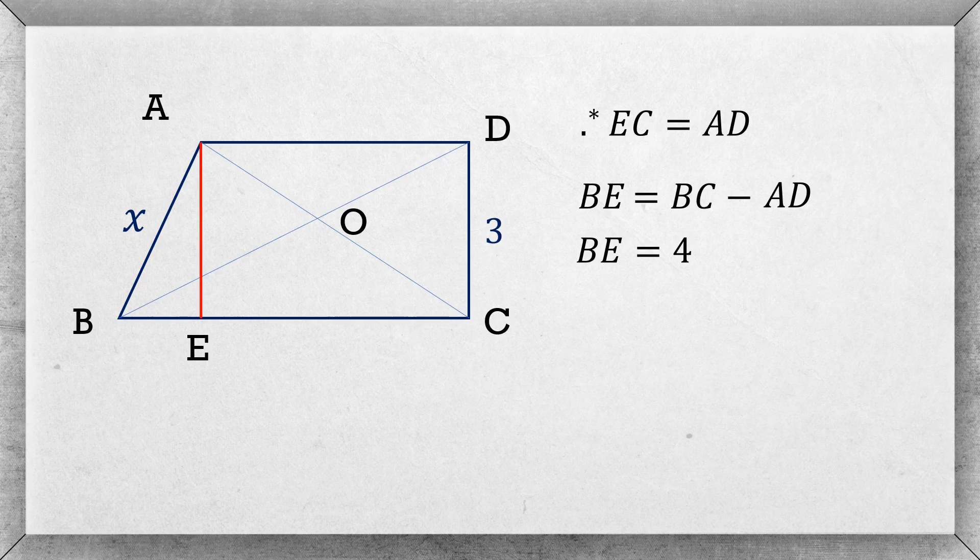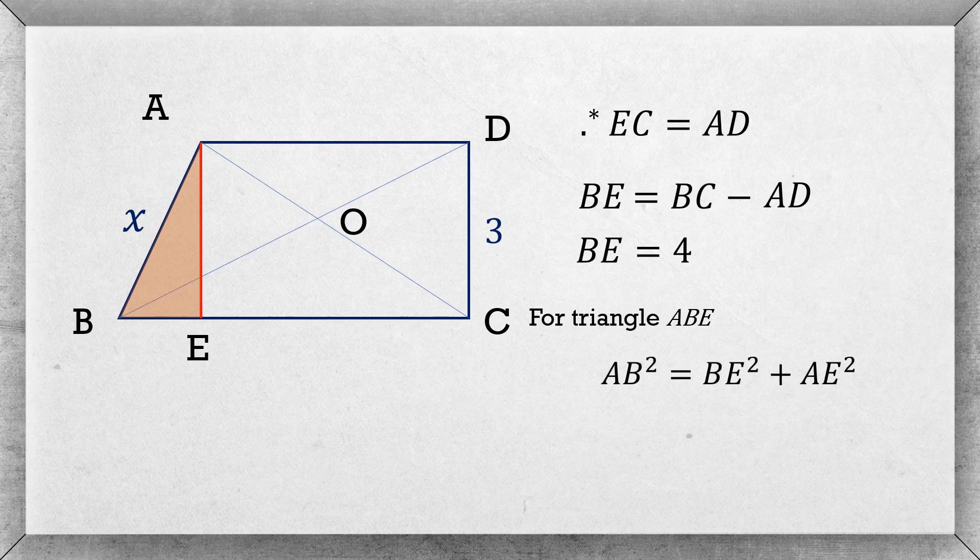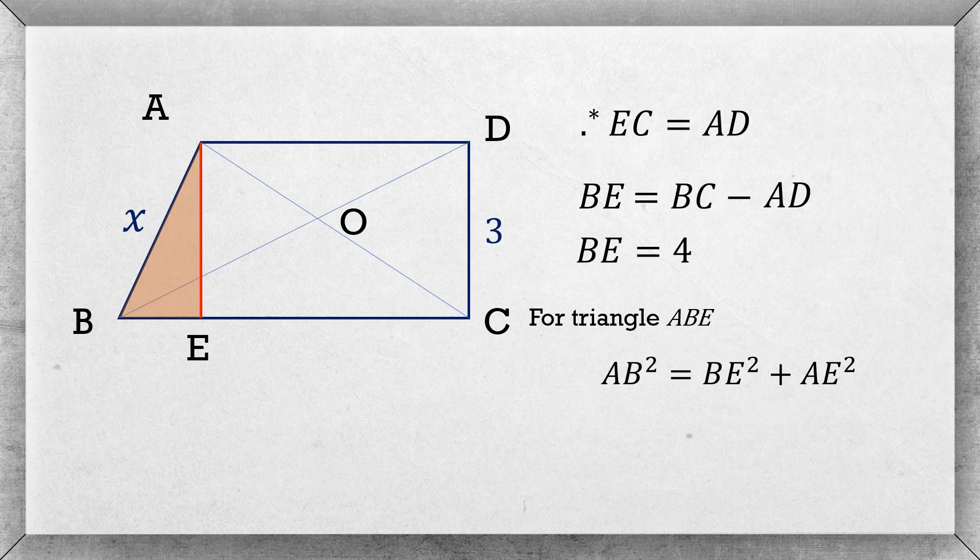Take the triangle ABE. It is a right angle triangle. Using the Pythagorean theorem we get AB squared equals BE squared plus AE squared. Here AB equals x, BE equals 4, and AE equals 3. So x squared equals 3 squared plus 4 squared. Simplifying this equation gives us x equals 5.